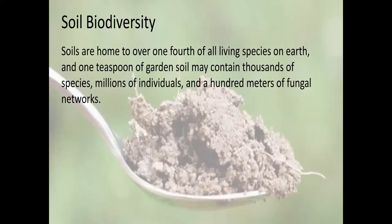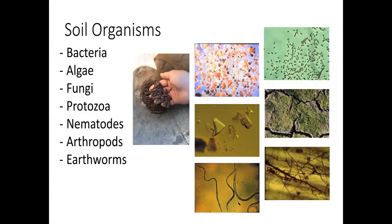So what's in this living soil? Soils are home to over one-fourth of all living species on Earth, and one tablespoon of garden soil may contain thousands of species, millions of individuals, and up to a hundred meters of fungal networks and hyphae. When I say it's living, I mean most soils you pick up a handful of have thousands of living things in them. The categories of living things include bacteria, algae, fungi, protozoa, nematodes, arthropods, and earthworms.